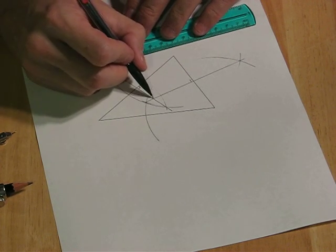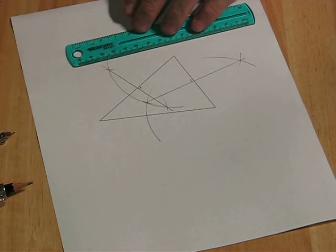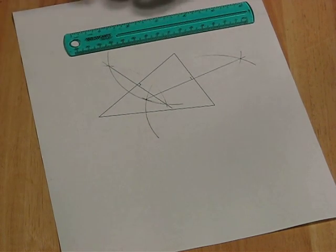And that's actually enough. If I perpendicularly bisect this side, it should cross right there also. So two is sufficient.